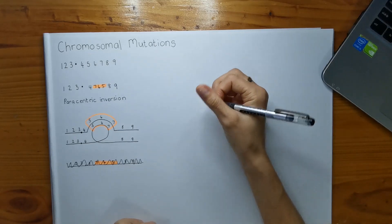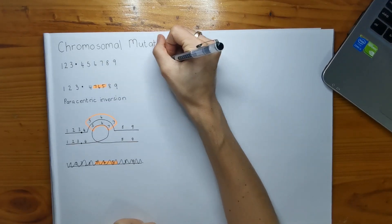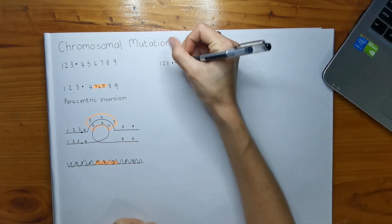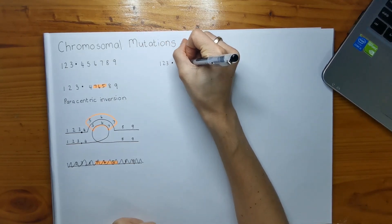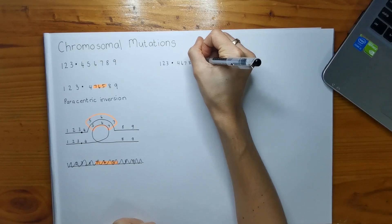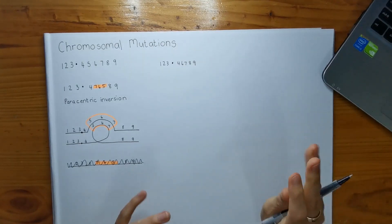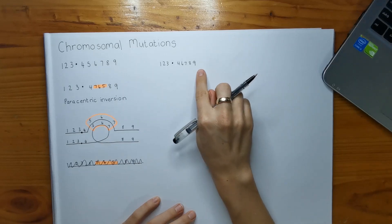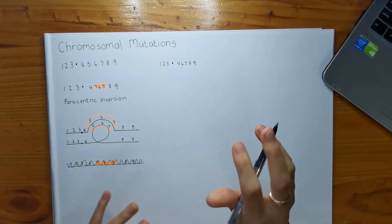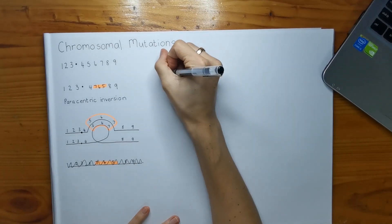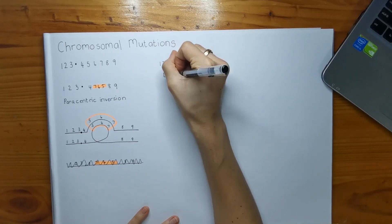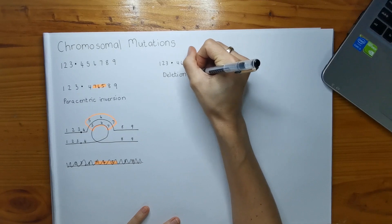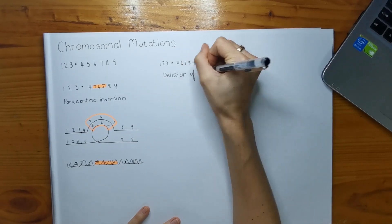So the next part - they give me a sequence that says one, two, three, and then a centromere, then four, six, seven, eight, and nine. We can clearly see that five is missing out of the sequence, so a deletion is occurring - specifically a deletion of gene five.